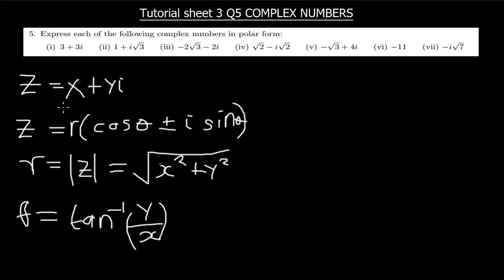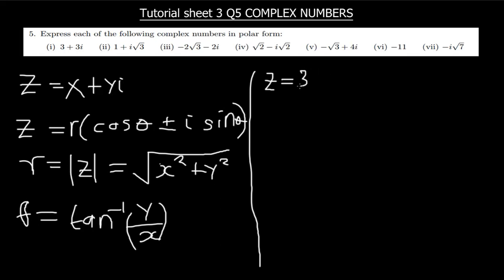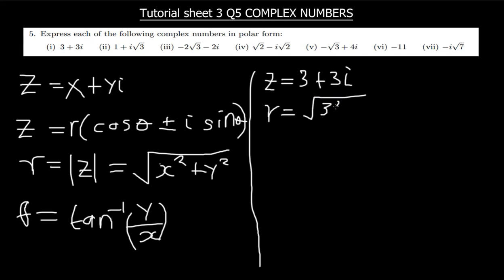Let's solve the first part. You need to master special angles to answer such questions. The first one is z = 3 + 3i. So here our x is 3 and our y is also 3. Before writing z in polar form, we first find r and θ. So r = √(x² + y²) = √(3² + 3²).